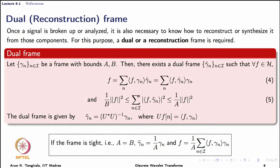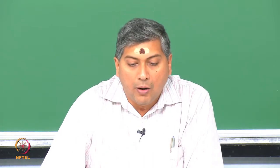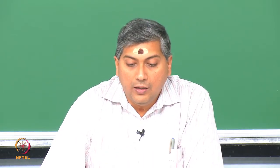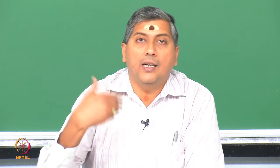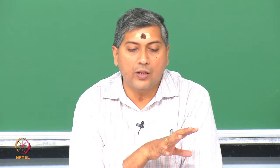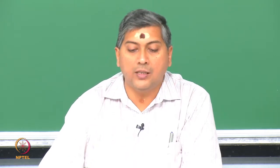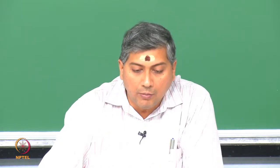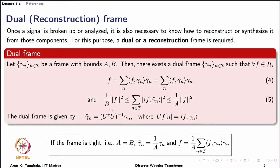The dual frame has to satisfy a frame condition. Because it is a dual frame, the bounds for the dual frame should be related to the bounds of the reference frame. We have gamma as the reference frame and gamma-tilde as the dual frame. A dual frame is also a frame, so a frame condition exists, but it is a dual of something, and that something determines what bounds A and B apply — and A and B here are the bounds on the reference frame gamma.